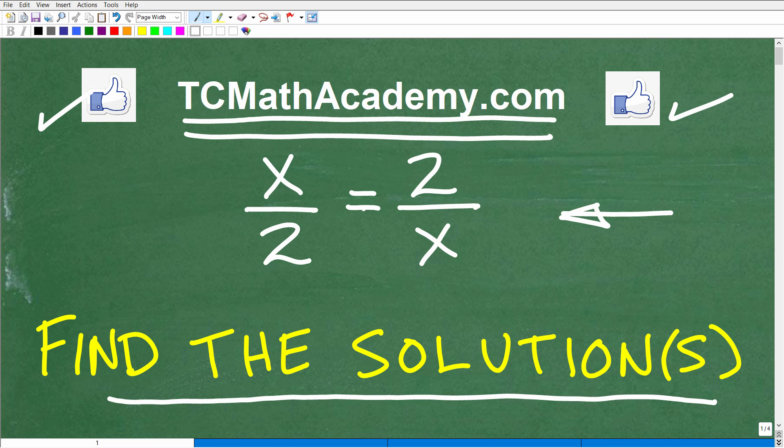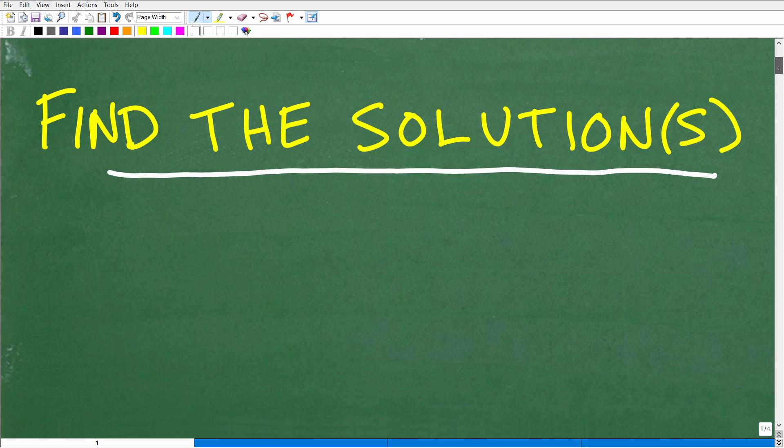So we have x over 2 is equal to 2 over x. It seems pretty basic, right? This is something you might see in an algebra one, a first-year algebra course. It doesn't seem that difficult. However, a lot of you are going to get this wrong. Let's take a look at the answer right now. What is x?